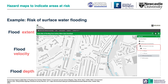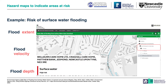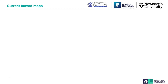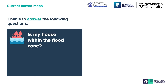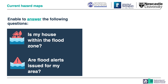This screenshot here shows us the extent of surface water flooding with a probability of 1 in 30 years. Combined with a postcode search, we can see that a care home is at high risk of flooding. These current available hazard maps can give us a general overview and help us to answer questions such as: Is my house within the flood zone? Are there any flood alerts issued for my area? Based on these available data sources, we now intend to enhance the available hazard map information to answer further questions.